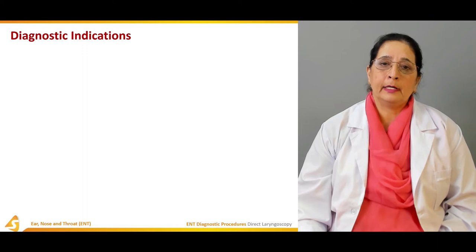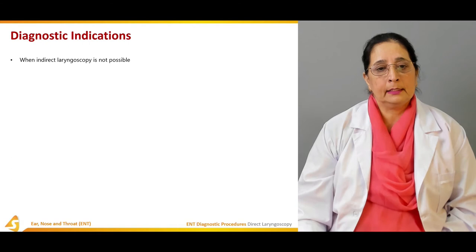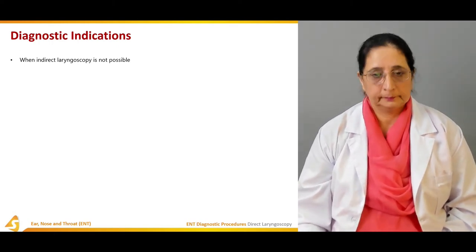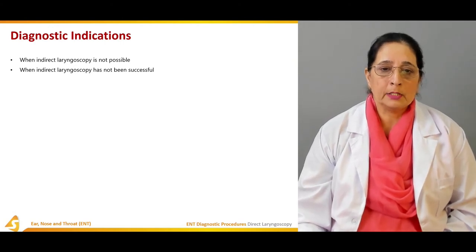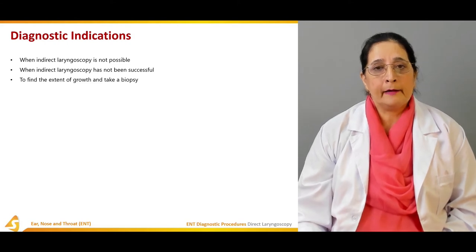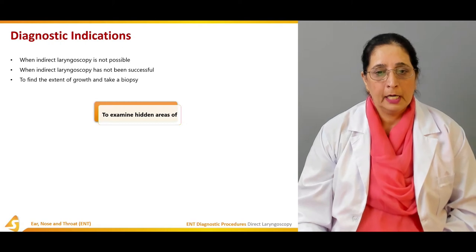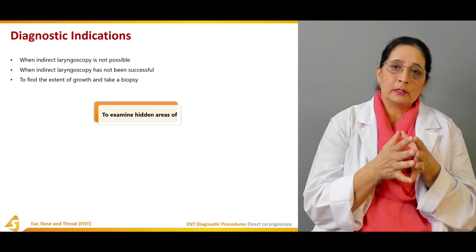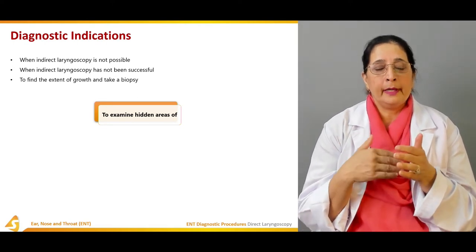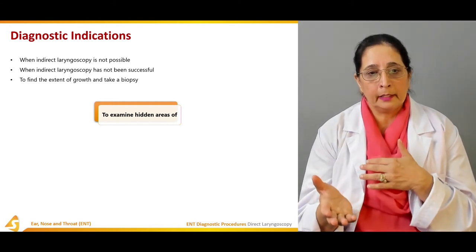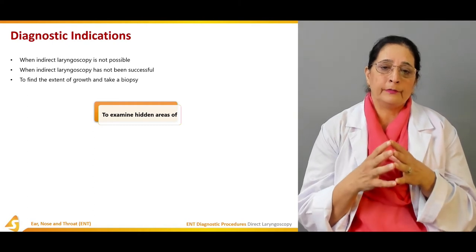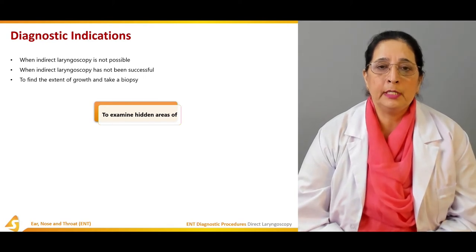Diagnostic indications of direct laryngoscopy: when indirect laryngoscopy is not possible, we need to go for direct laryngoscopy. When indirect laryngoscopy has not been successful to find the extent of growth and to take a biopsy, direct laryngoscopy needs to be performed. It is also indicated to examine hidden areas when indirect laryngoscopy is not possible or not indicated.